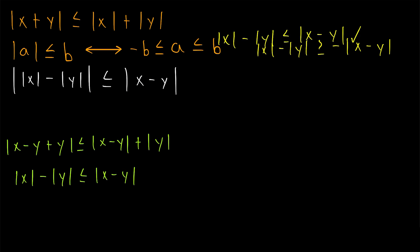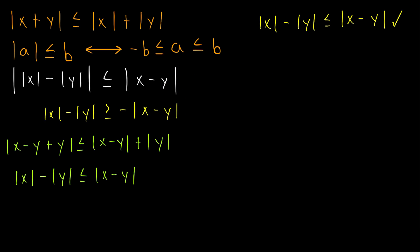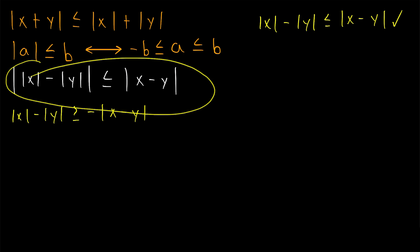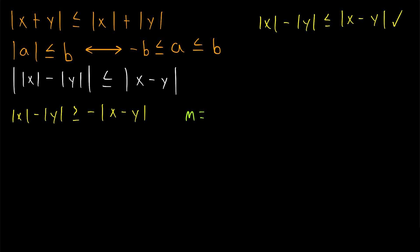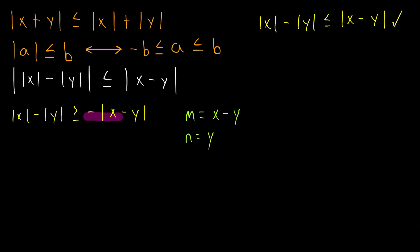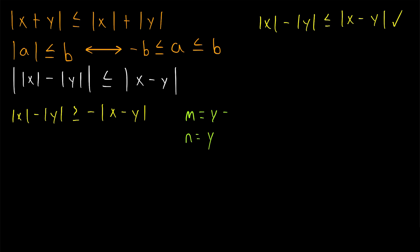Now all that remains is to prove that |X| - |Y| ≥ -|X - Y|, and then by our supporting result, we will have proved the reverse triangle inequality. For the previous part, we let M equal X minus Y and N equal Y. But this inequality is kind of like our previous one with a couple things flipped — we have greater than or equal to instead of less than or equal to, and we have the opposite of |X - Y|. So instead of M equals X minus Y, let's try setting M equal to Y minus X.